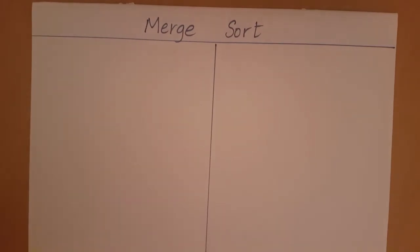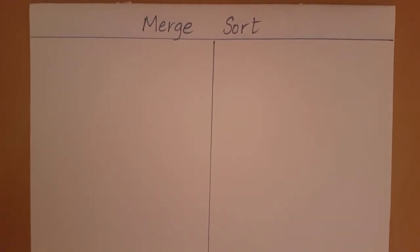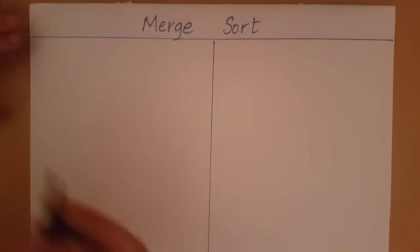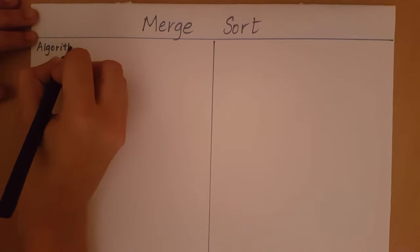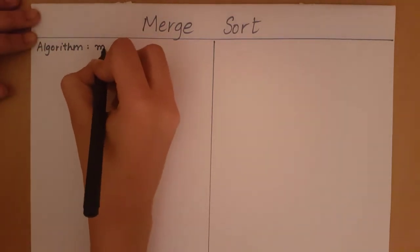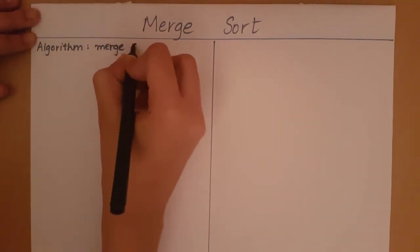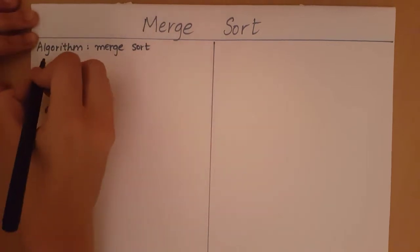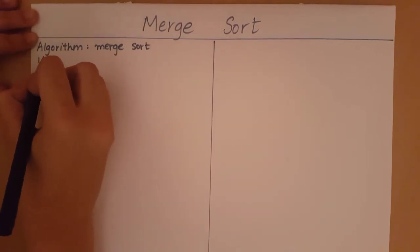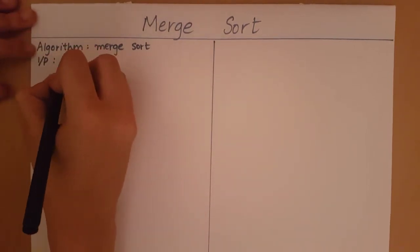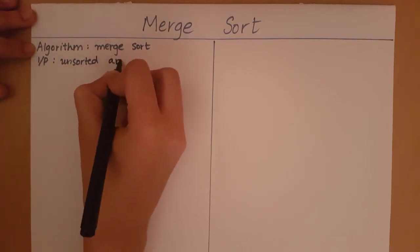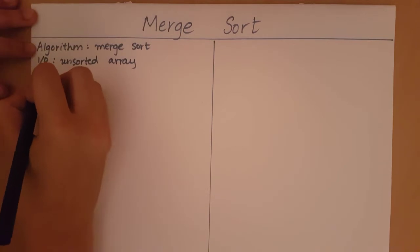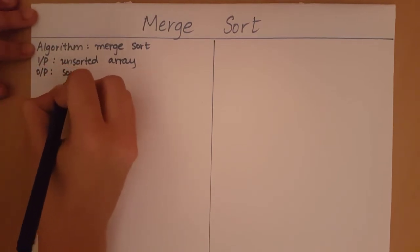In this video we will take a look at how to write the pseudocode for the merge sort algorithm. The algorithm we are trying to write is merge sort. Our input will be an unsorted array, and our output is going to be a sorted array.